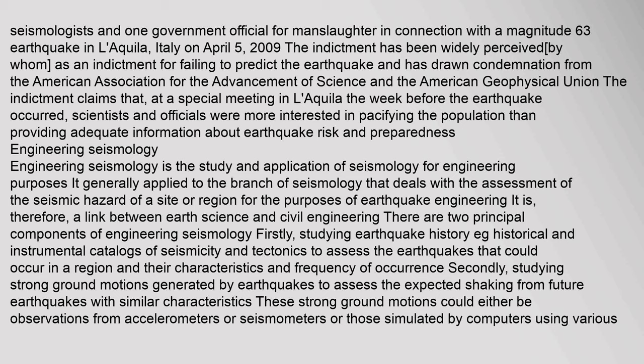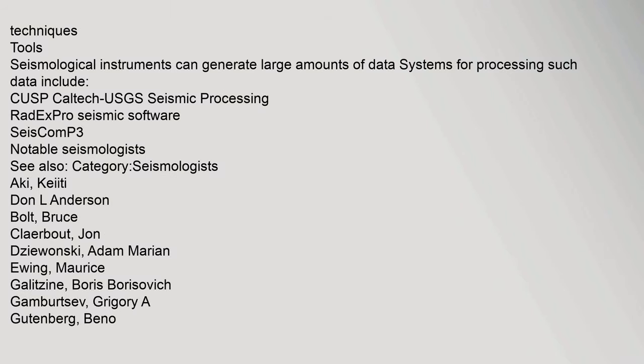Engineering seismology is the study and application of seismology for engineering purposes. It generally applies to the branch of seismology that deals with the assessment of the seismic hazard of a site or region for the purposes of earthquake engineering, and is therefore a link between earth science and civil engineering. There are two principal components: firstly, studying earthquake history — historical and instrumental catalogs of seismicity and tectonics — to assess earthquakes that could occur in a region; and secondly, studying strong ground motions generated by earthquakes to assess expected shaking from future earthquakes with similar characteristics.